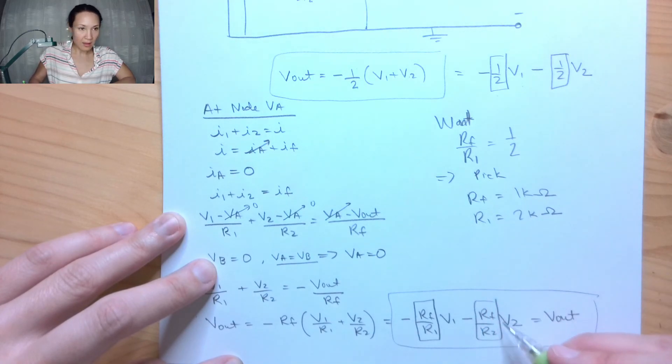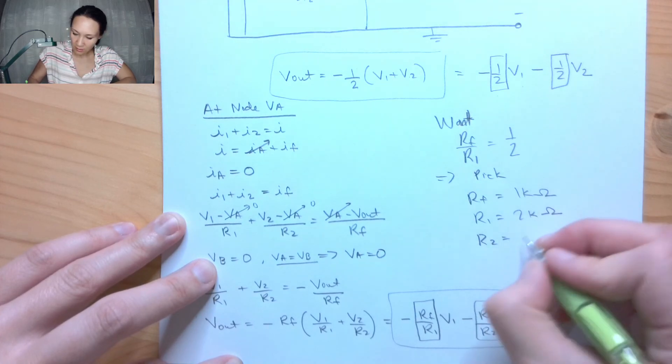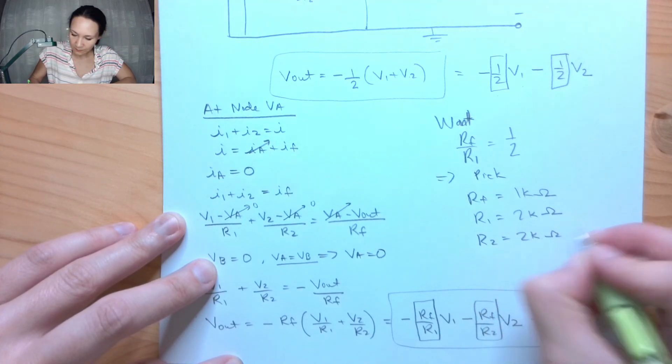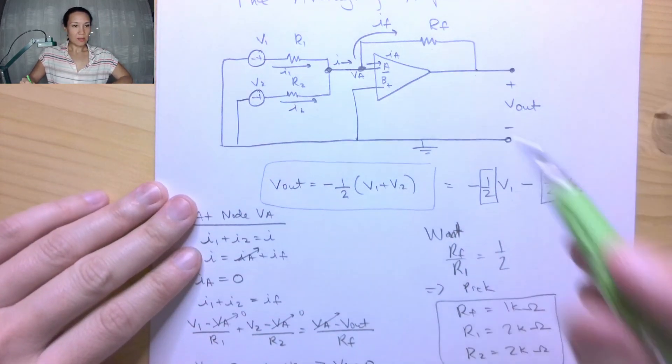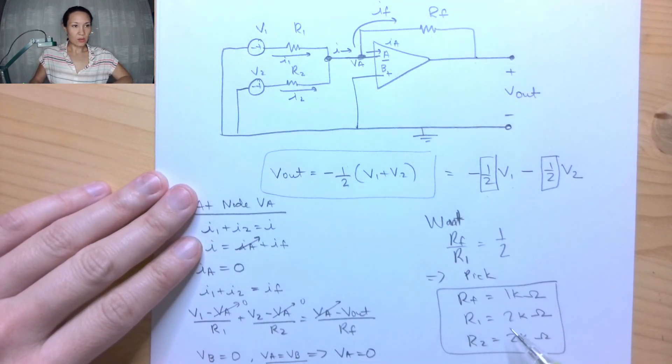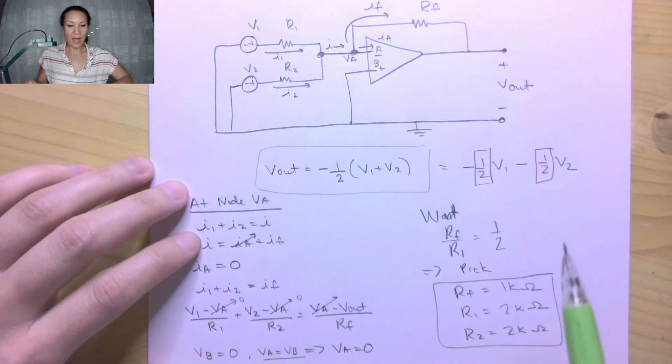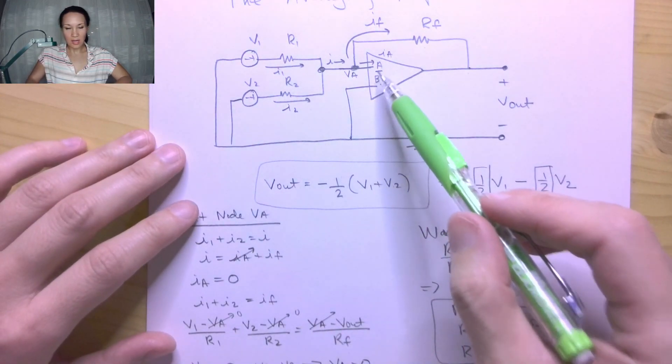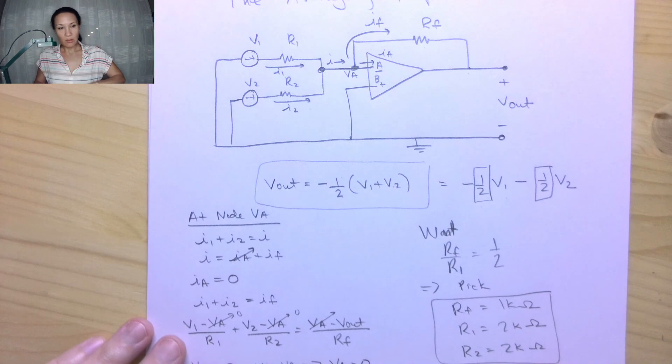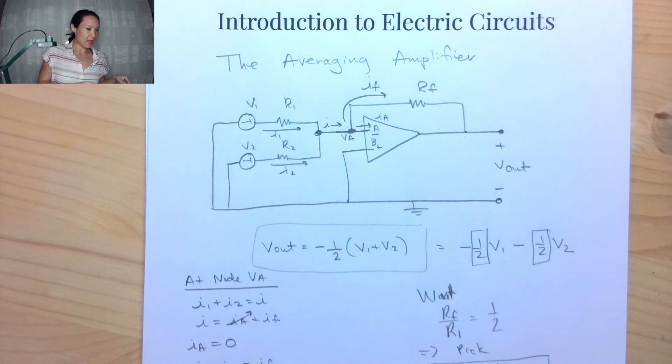So that means that, well, we've already picked Rf. So in order for R2 to meet the constraint, I can also let this be 2k ohms. So if I have this orientation for my circuit with these resistors placed as input resistors and the feedback resistor, then this will act as an averaging amplifier with an inverting op amp.